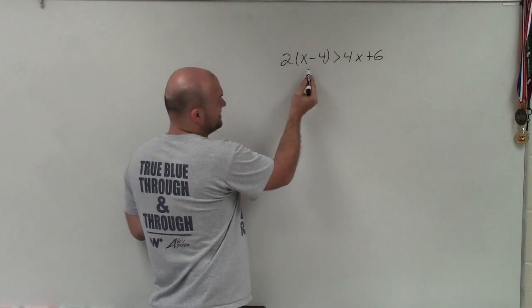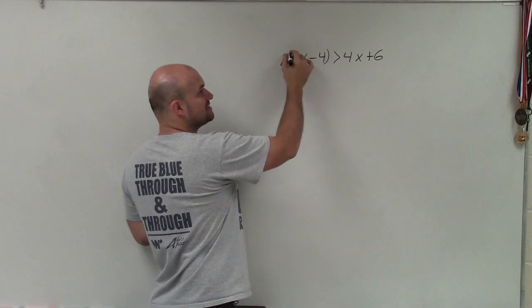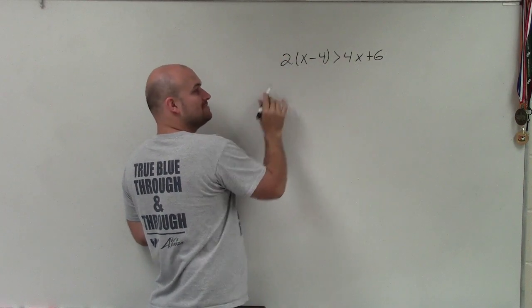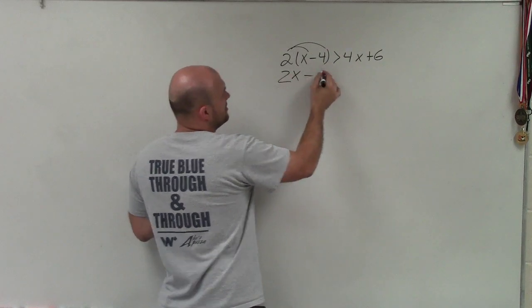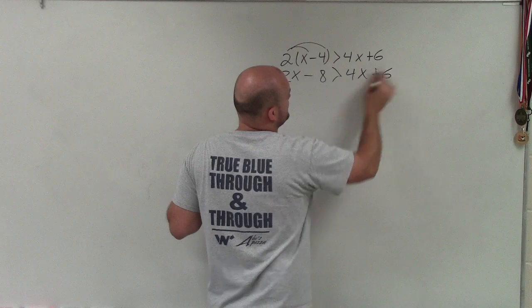To do that, I first need to get rid of these parentheses. The reason we have parentheses is because this 2 is being multiplied by the x minus 4. So I need to distribute that 2. I'm left with 2x minus 8 is greater than 4x plus 6.